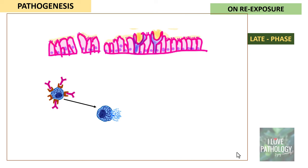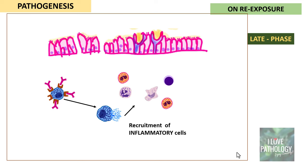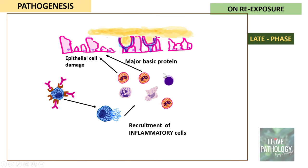In the late phase, the degranulated mast cells continue to recruit more and more inflammatory cells — eosinophils, neutrophils, histiocytes or macrophages, and even lymphocytes. Remember, eosinophils are also recruited by eotaxin, which is produced by epithelial cells. More and more eosinophils accumulate in the sub-mucosa, producing major basic protein, which results in epithelial cell damage. So the late phase involves recruitment of inflammatory cells and epithelial damage by eosinophil-derived major basic protein.